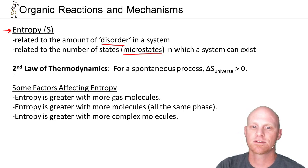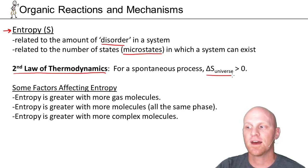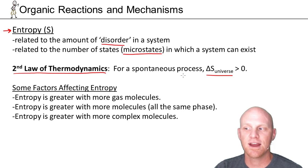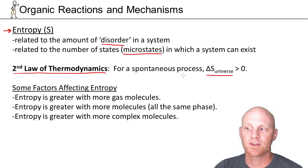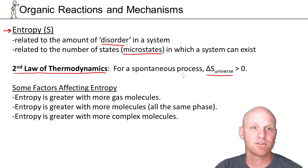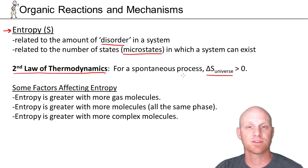The second law of thermodynamics is important here. For a spontaneous process, the delta S of the universe is going to be positive — the amount of entropy in the entire universe goes up. When we look at the delta S of a reaction, that's just the system. The universe is composed of the system and the surroundings, so the system might have a negative delta S, but the surroundings will make up for it with an even more positive delta S.